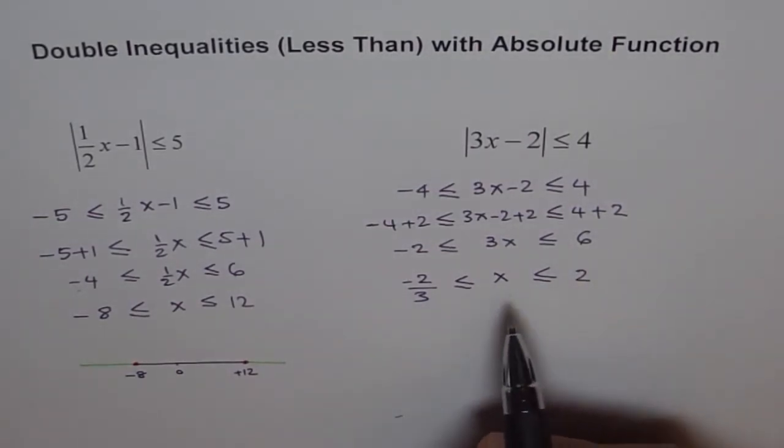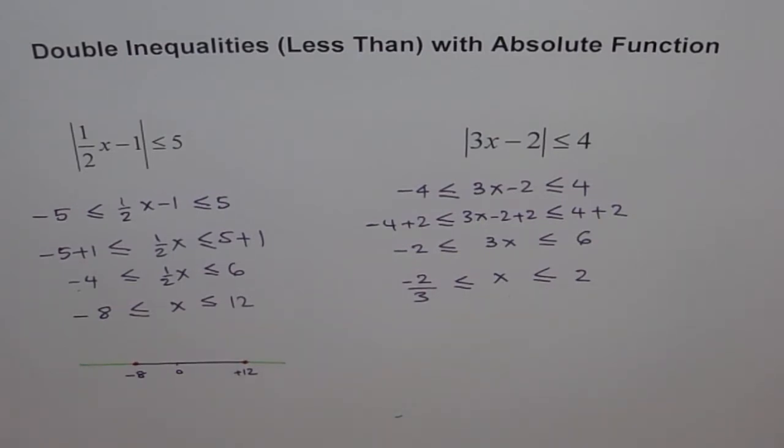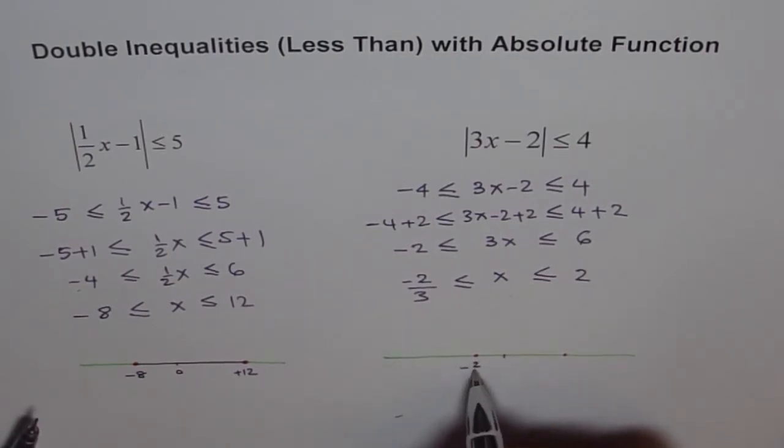We can write this as, this is 0. So, minus 2 over 3 is less than this point which is included and let's say this is 2 for us. So, we can show our answer as minus 2 over 3, this is 0 and that's 2 and a line joining them. Within this portion, we get our answer.